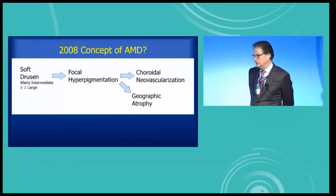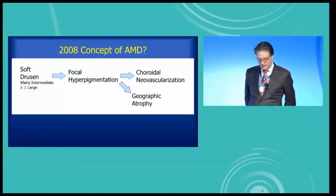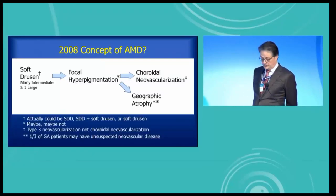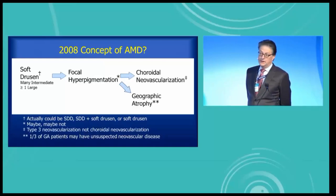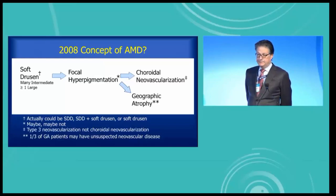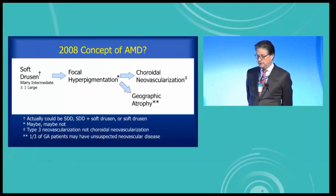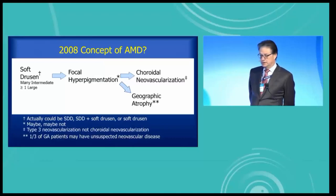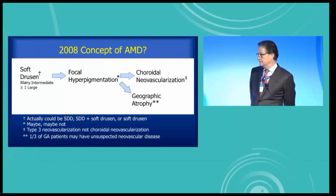So we can start with the 2008 idea and we have to add a couple of things to it, because it's not exactly right. You can start off with soft drusen, but remember — at least in the AREDS study — that could mean you had pseudodrusen, or pseudodrusen plus soft drusen, or just soft drusen. They could go to focal hyperpigmentation, but maybe not — I showed you that case with subretinal drusenoid deposits that didn't have focal hyperpigmentation. They could go to choroidal neovascularization, but type 3 isn't choroidal neovascularization. And finally, geographic atrophy is an unusual entity — Shirley Sarks and John Sarks showed that 45% of cases of geographic atrophy actually have undetected CNV in histopathology. So geographic atrophy, it's not an either-or thing — it's kind of a mix of both.